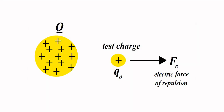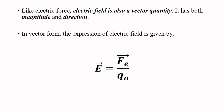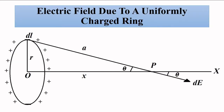We introduce a test charge, find out the Coulombic electric force, and then the electric field is the force exerted on that test charge divided by the test charge itself — that is the definition of electric field. So here we have to find out the electric field generated by a uniformly charged ring. This ring has a total charge of Q which is uniformly distributed throughout.